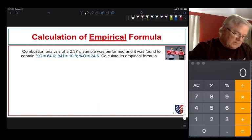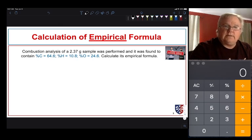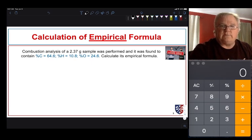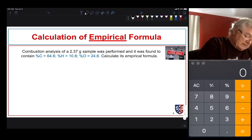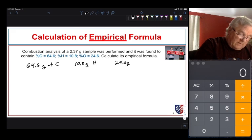So let's take an example here. Combustion analysis of a 2.37 gram sample was performed and it was found to contain 64.6% carbon, 10.8% hydrogen, and 24.6% oxygen. How do we determine its empirical formula? First thing we're going to do is hit the easy button and assume we have 100 grams of material. If we make that assumption, then it's easy because we can say that we have 64.6 grams of carbon, 10.8 grams of hydrogen, and 24.6 grams of oxygen.